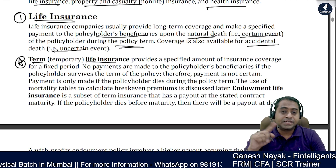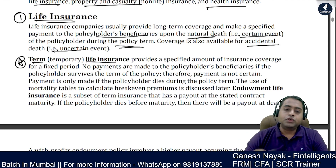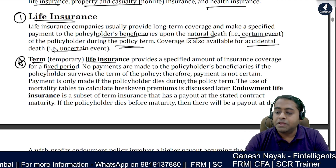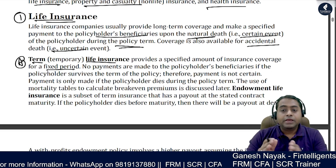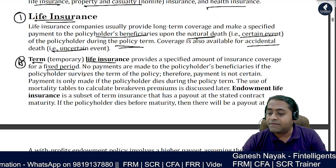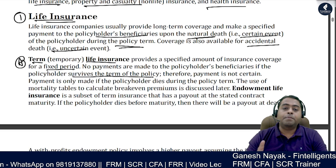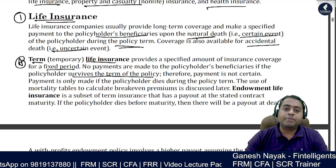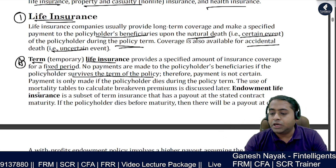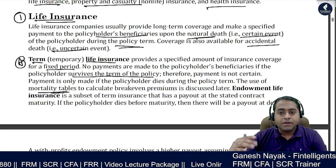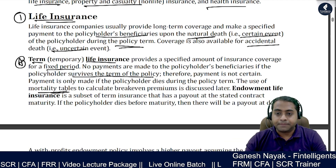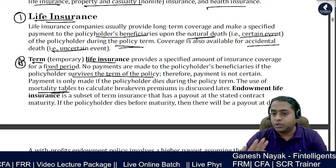Term life insurance means the insurance company covers you for a particular fixed term, and your premium is fixed from the start. If you die within that term, the insurance company pays you the amount. If you survive the term, there is no payment. You only get money if you die within that period. When insurance companies calculate the premium, they use the mortality table — which tells you the probability of the person dying — and your premium is decided on that basis.